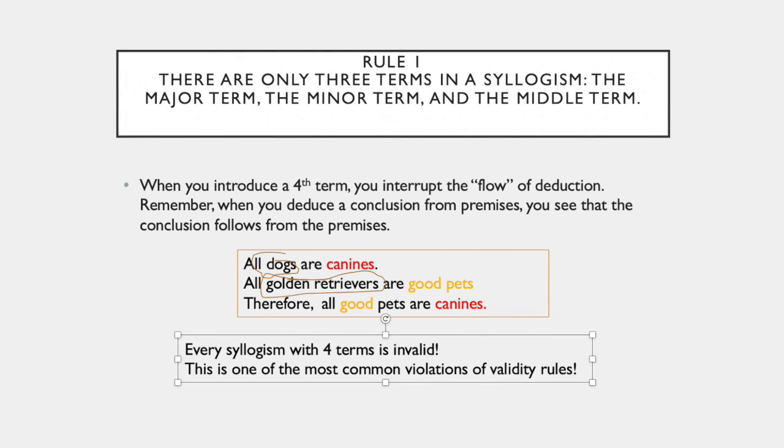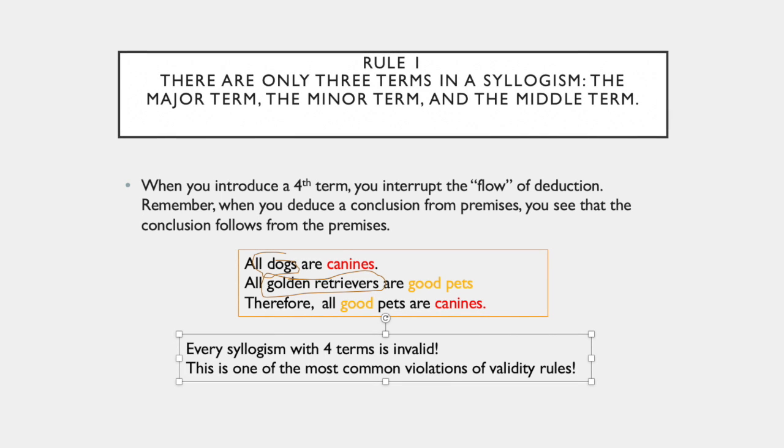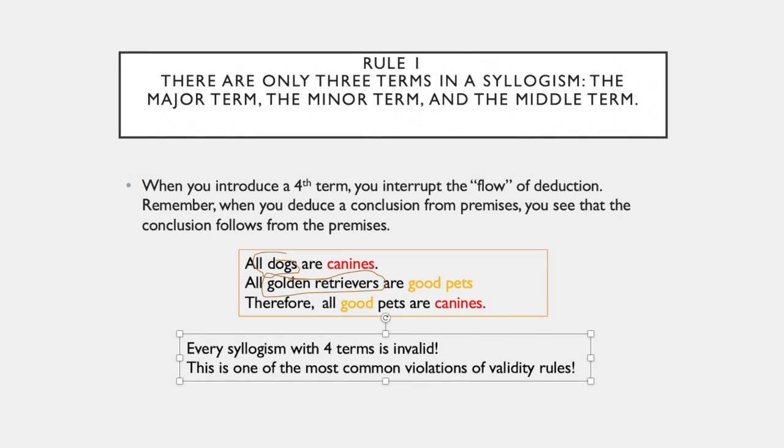Now this should make sense to you because in the syllogisms we've looked at, we've only had three terms: the major, minor, and middle term.